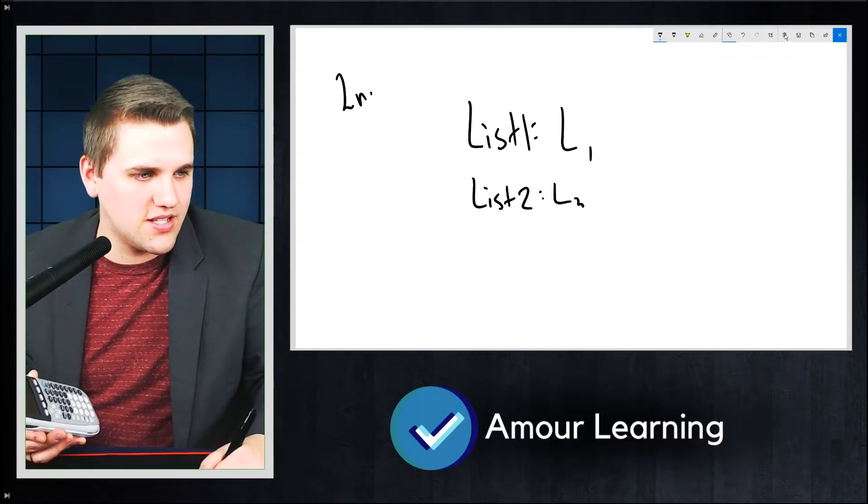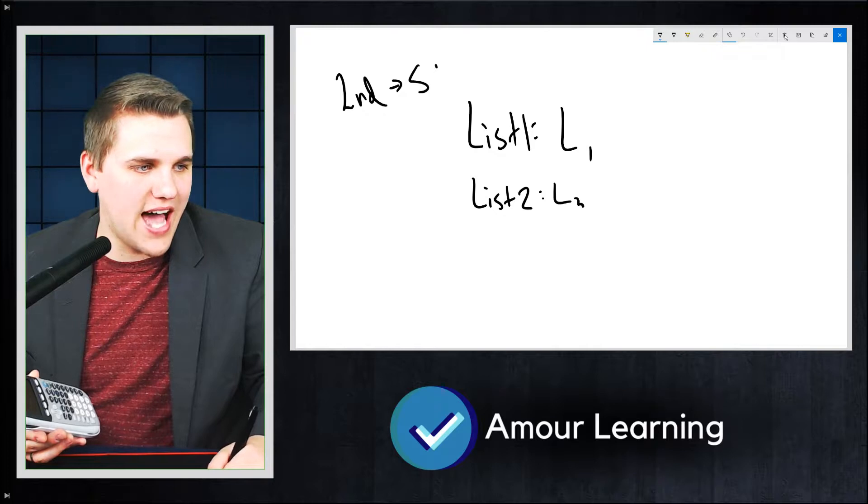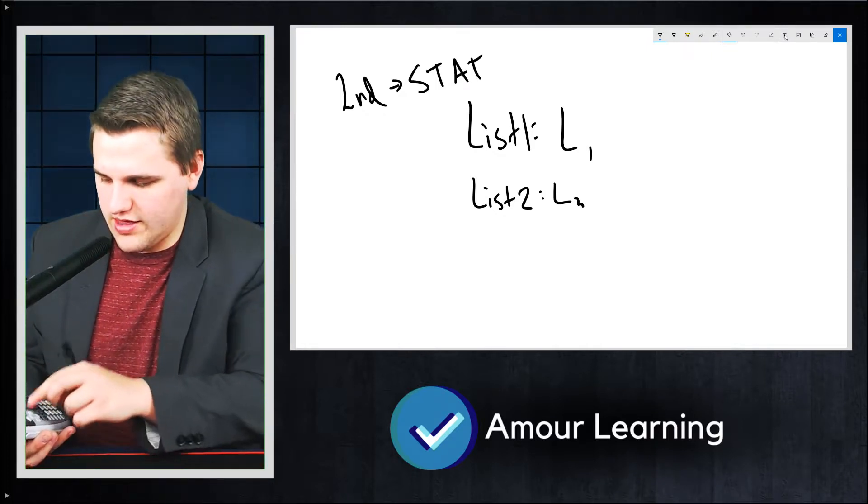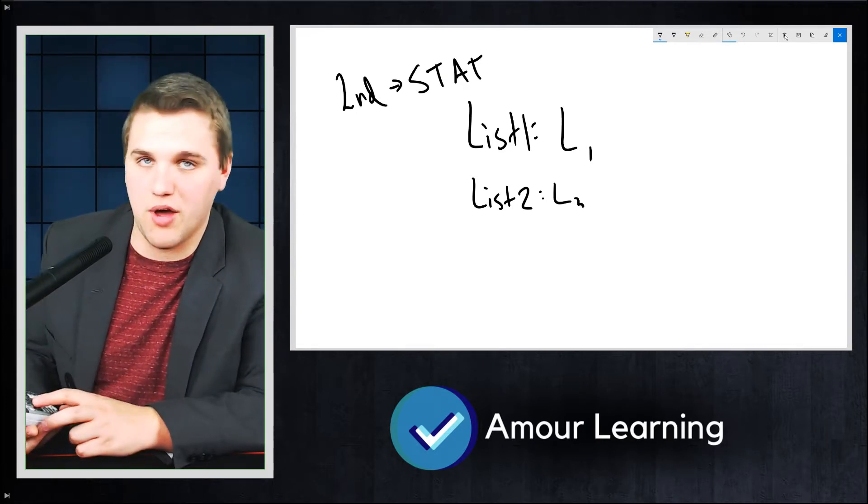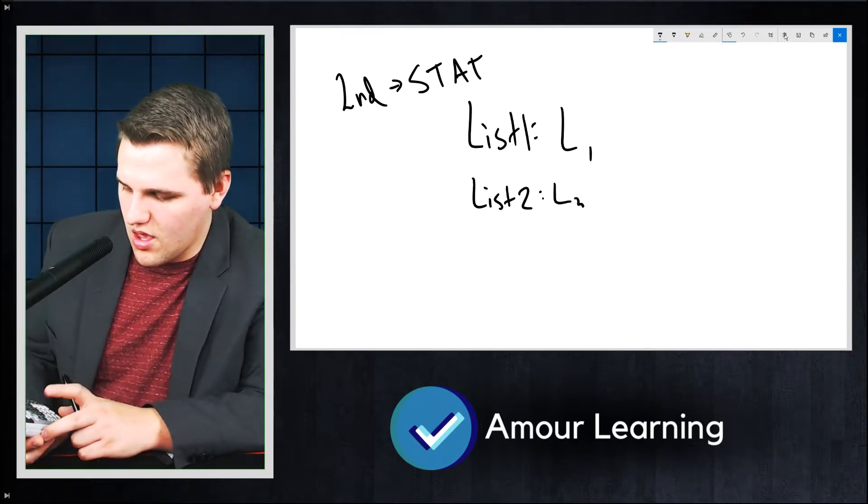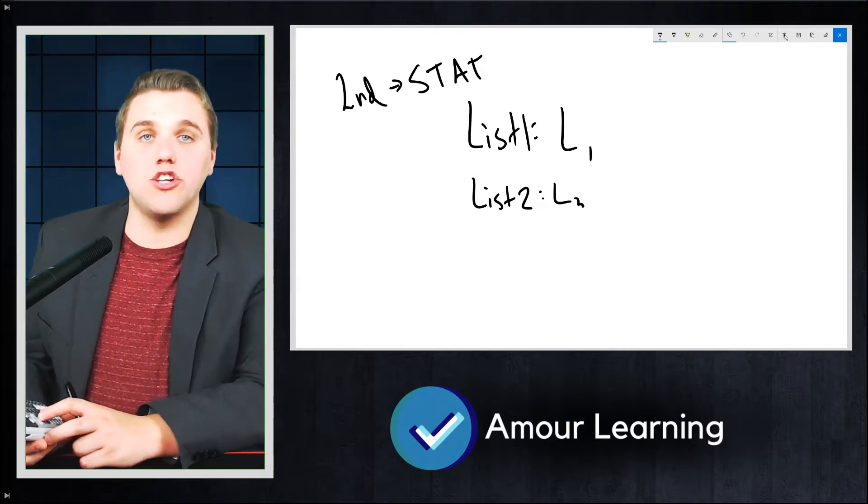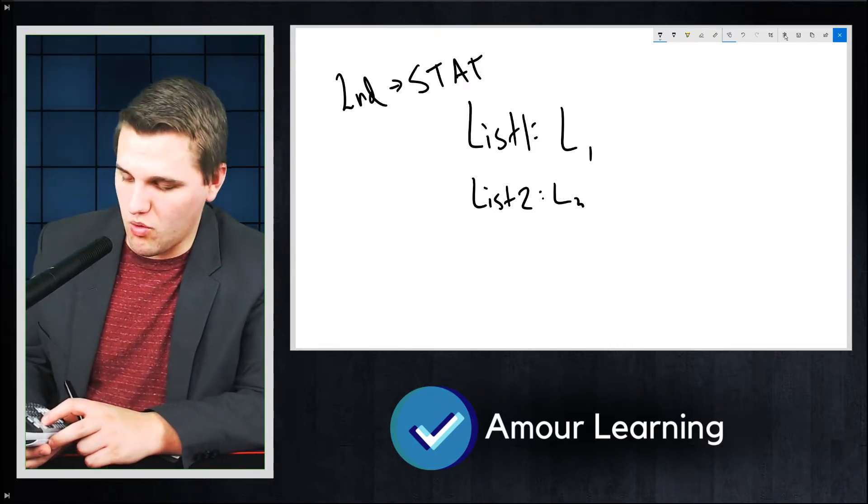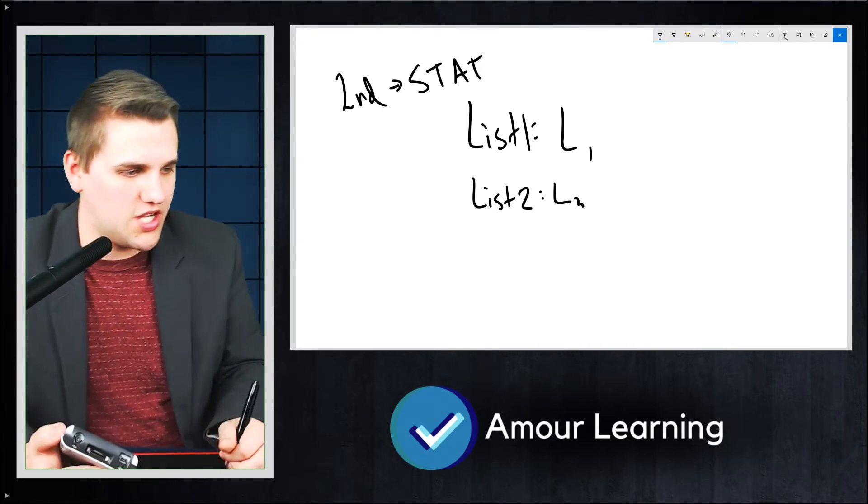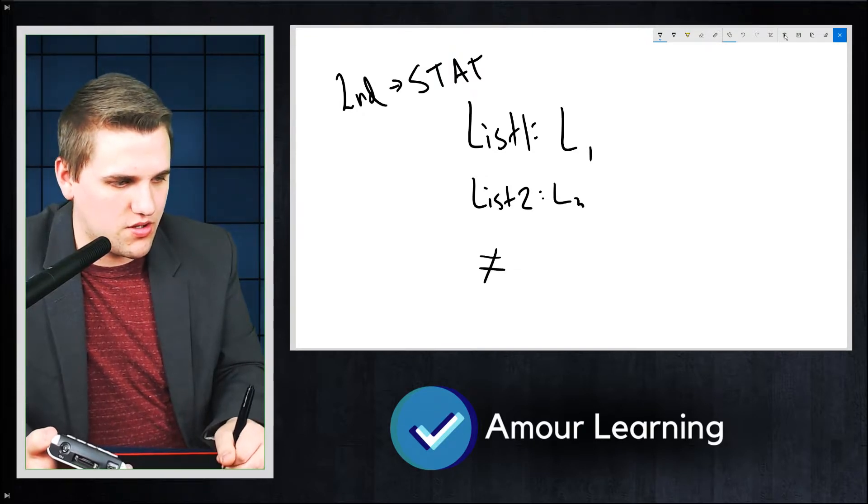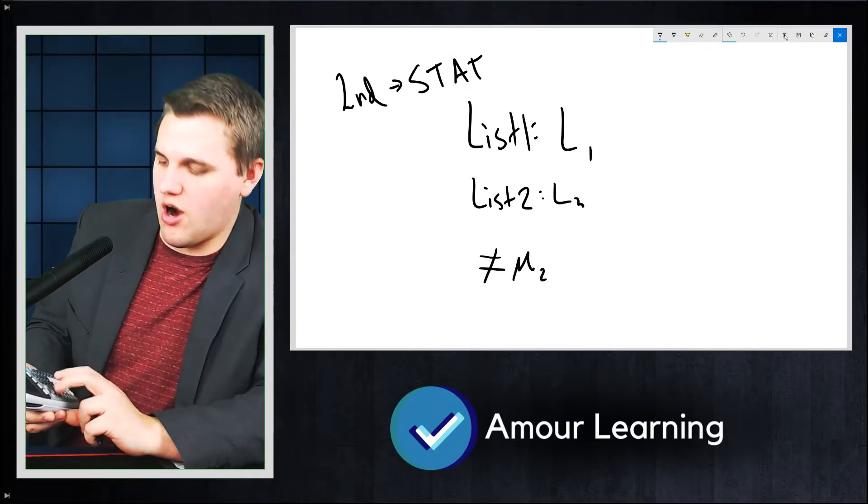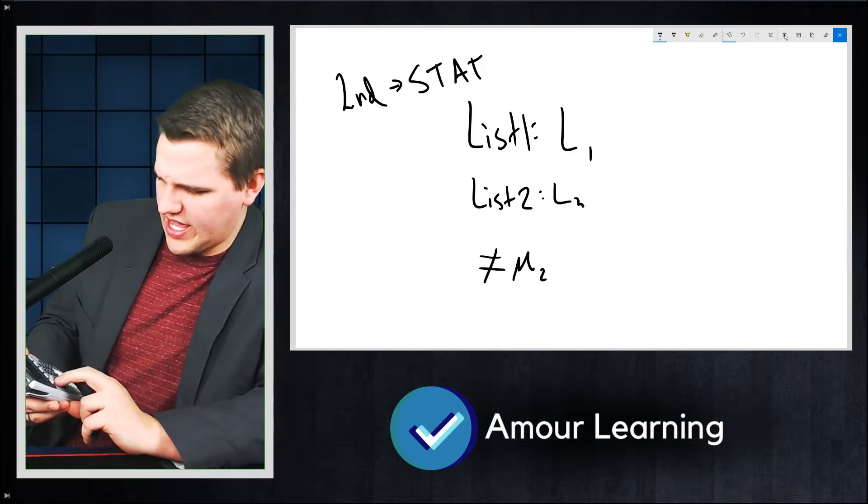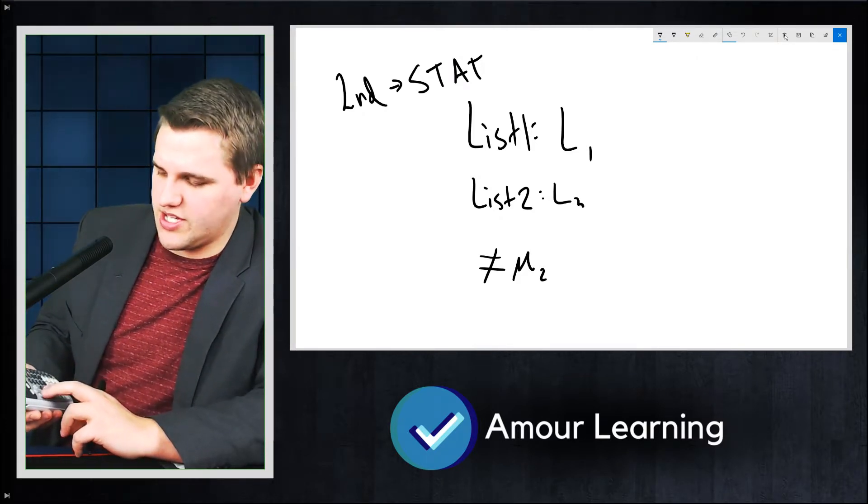And that will allow you to pick which list you want to choose. So you can put L1 and L2 there. Frequency 1 should be 1. Frequency 2 should be 1 as well. You should be choosing does not equal mu2 as the alternative hypothesis.